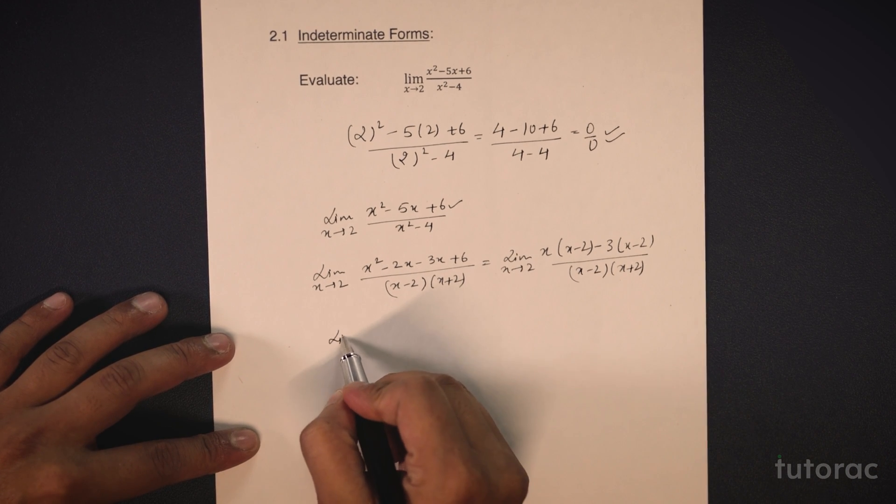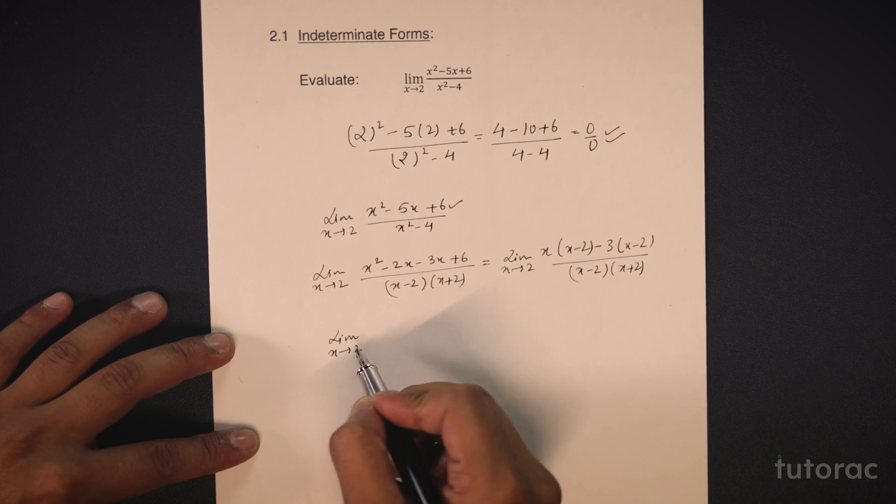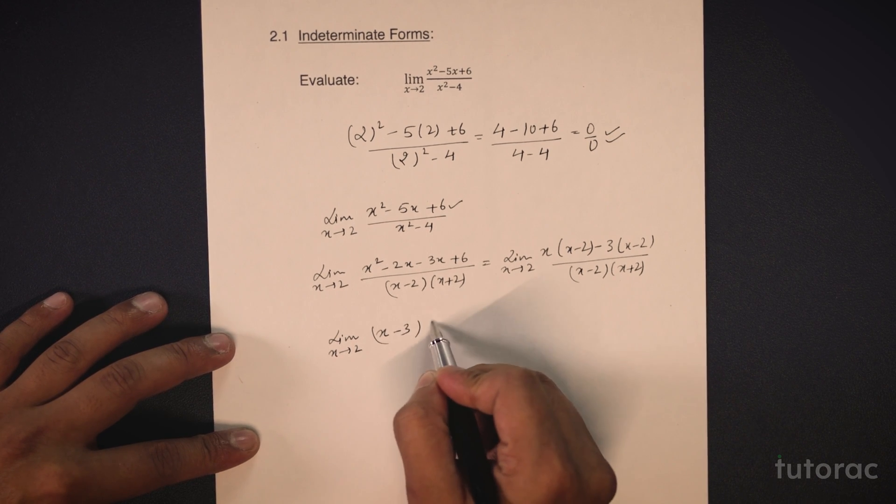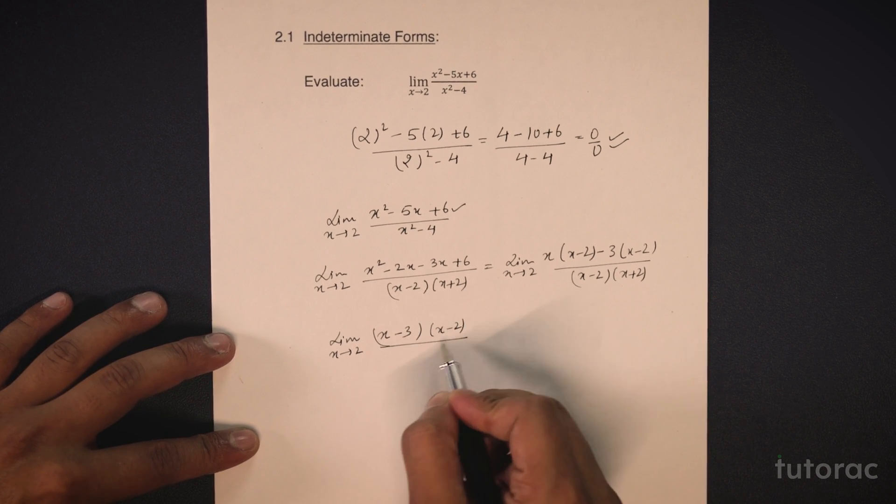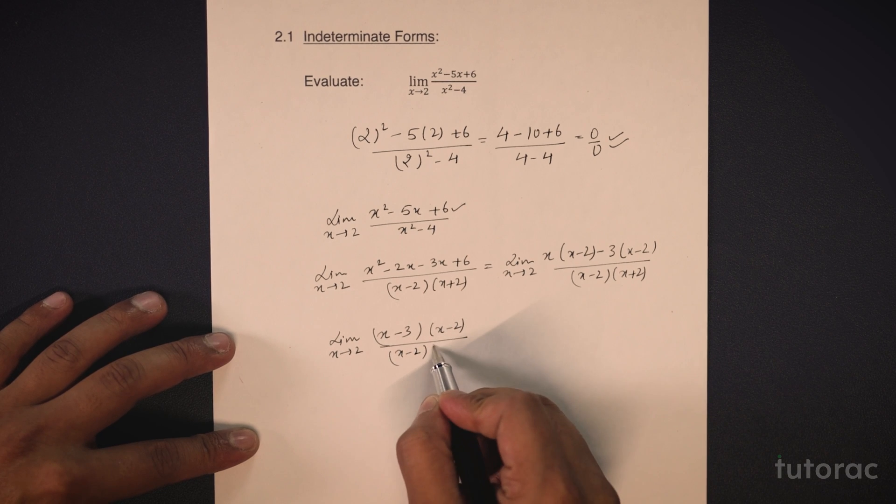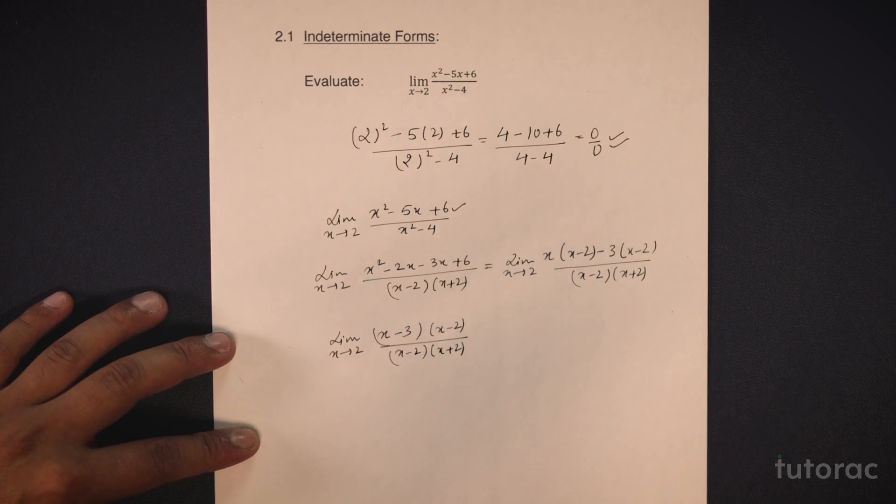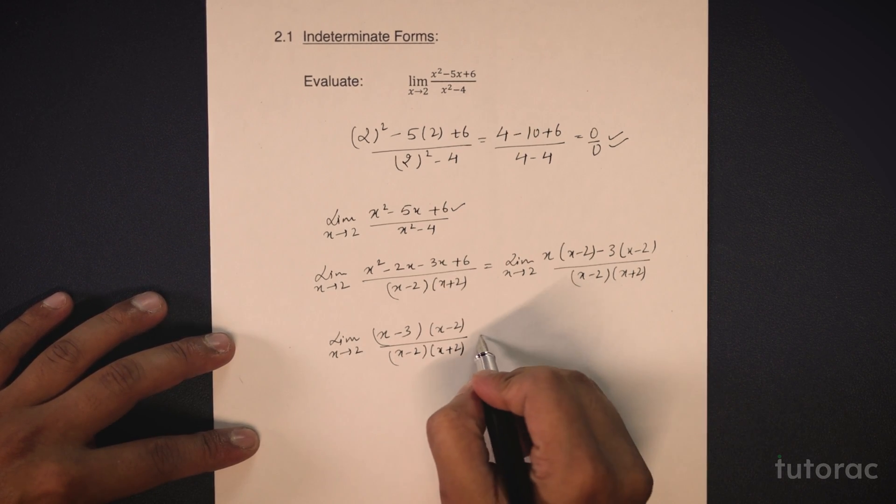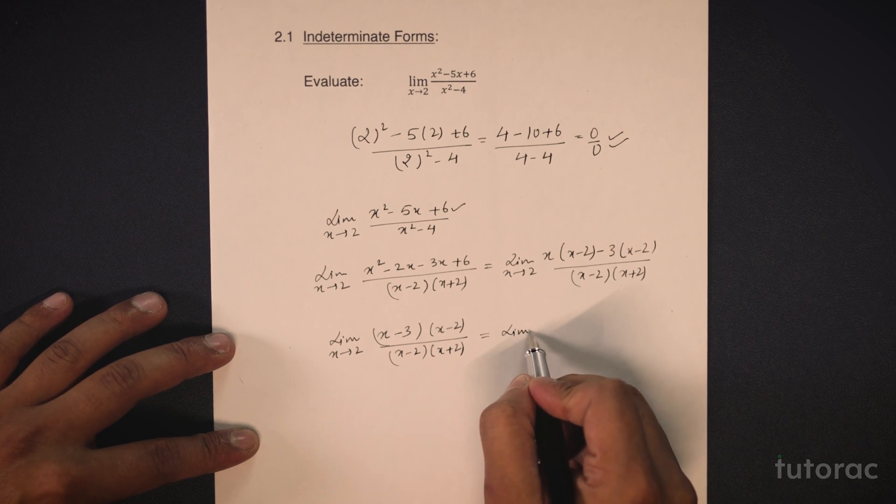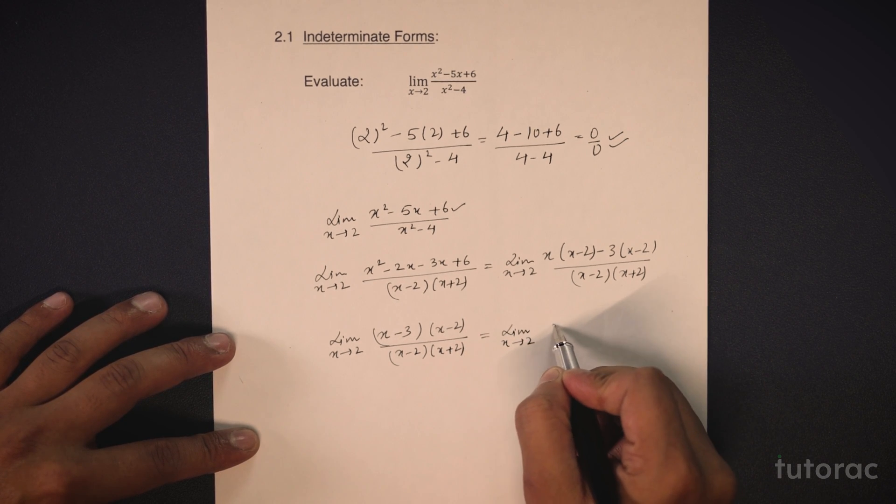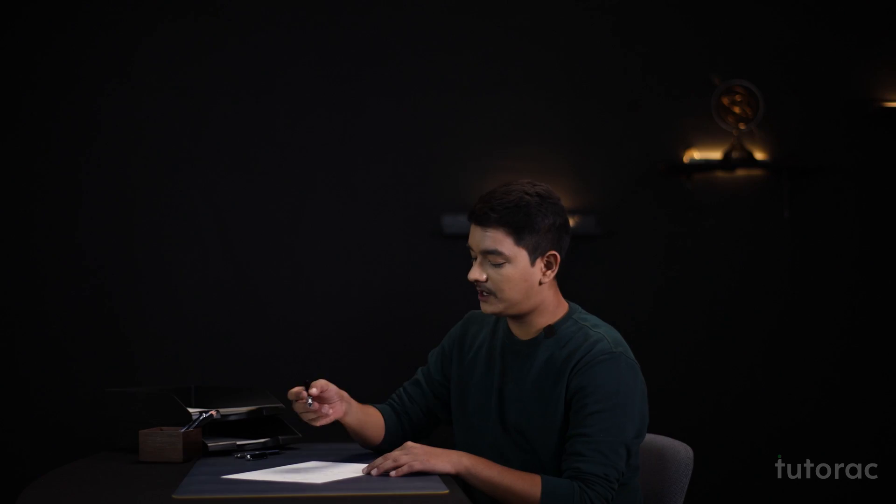We can get limit x tends to 2 x minus 3 multiplied by x minus 2 upon x minus 2 multiplied by x plus 2. We will finally get limit x tends to 2 x minus 3 upon x plus 2.